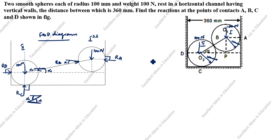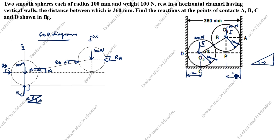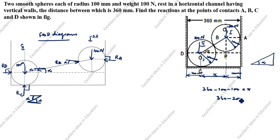Now we find angle alpha using geometry. The radius of each sphere is 100mm, so the center-to-center distance (hypotenuse) is 100 + 100 = 200mm. The horizontal distance between centers: 360mm minus 100mm minus 100mm equals 160mm. So the adjacent side is 160mm and the hypotenuse is 200mm.